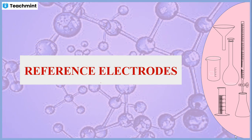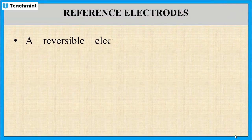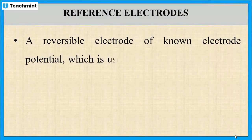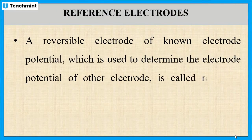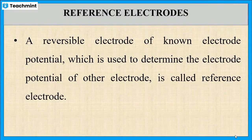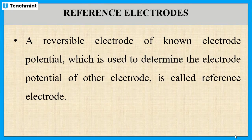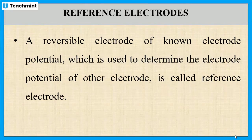I'm going to explain about reference electrode. A reference electrode is a reversible electrode, meaning it acts as a cathode as well as an anode. It has a known electrode potential, which means its electrode potential is already known to us. Hence, we can use this reference electrode to determine the electrode potential of an unknown electrode.